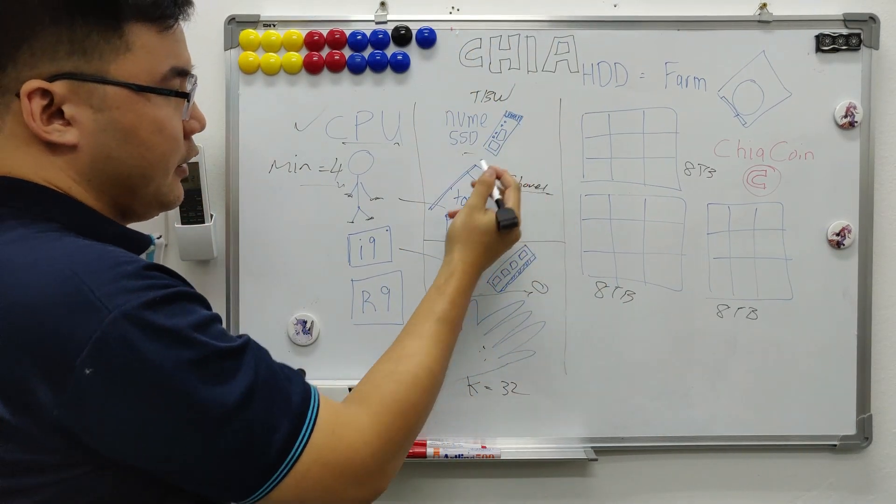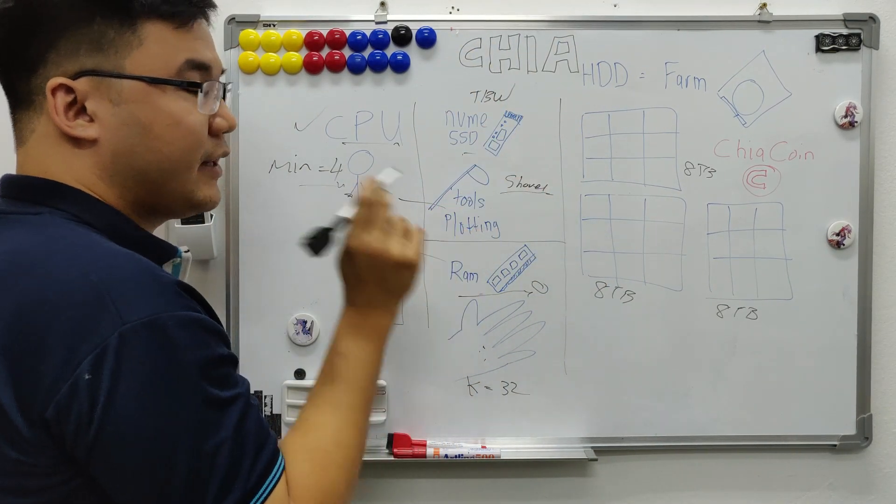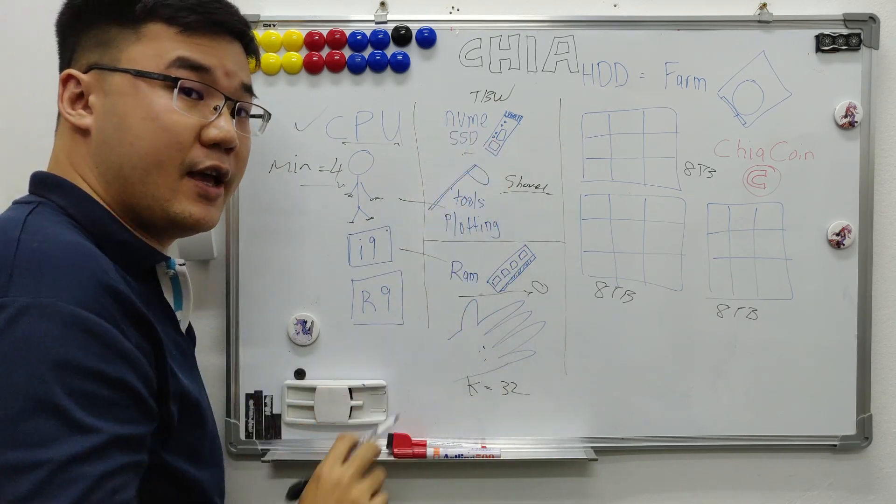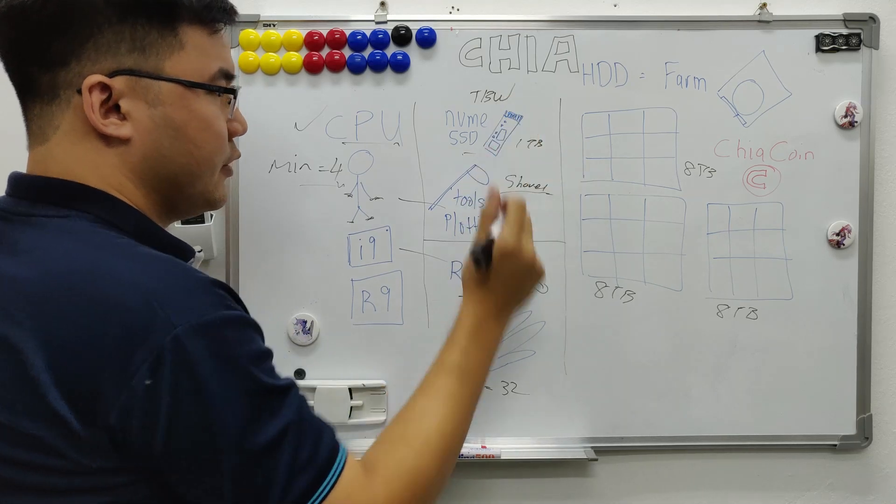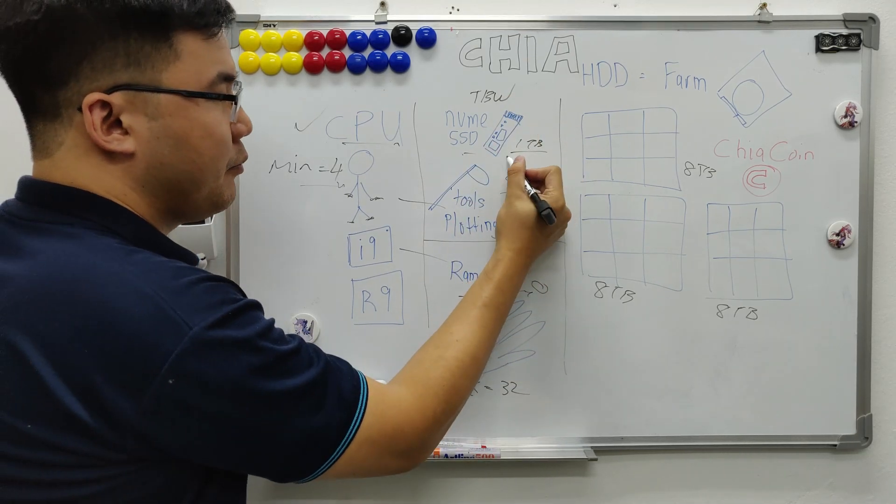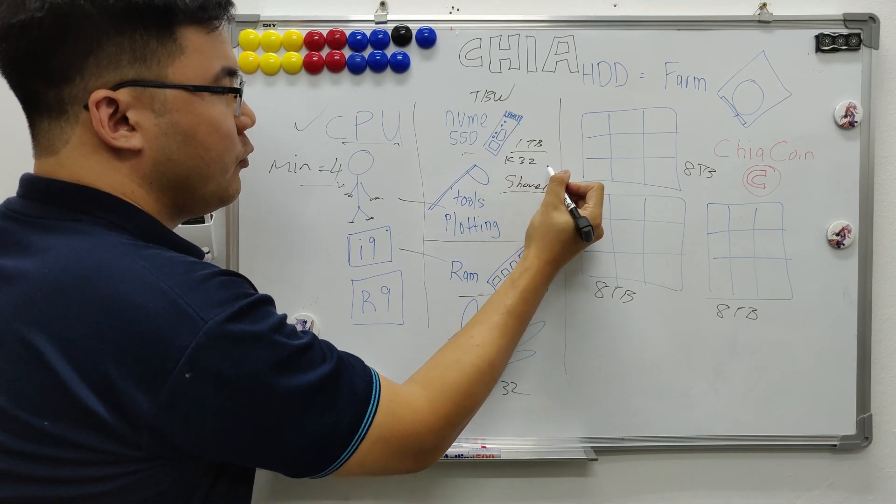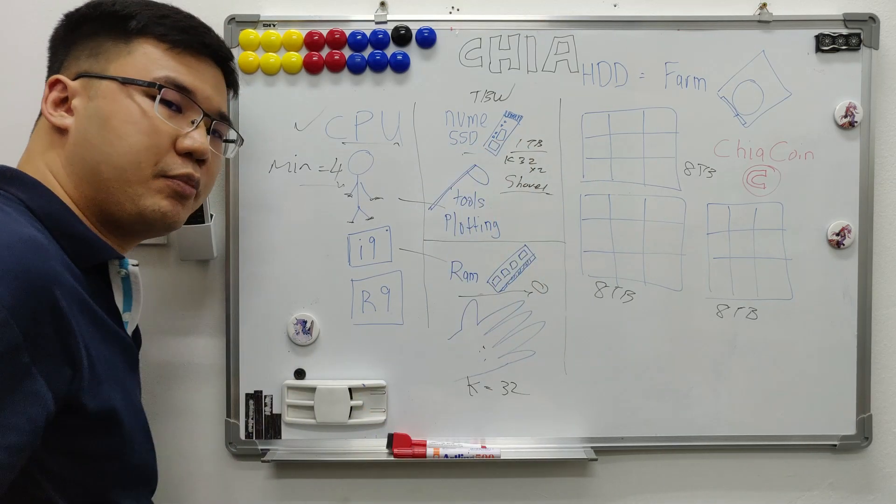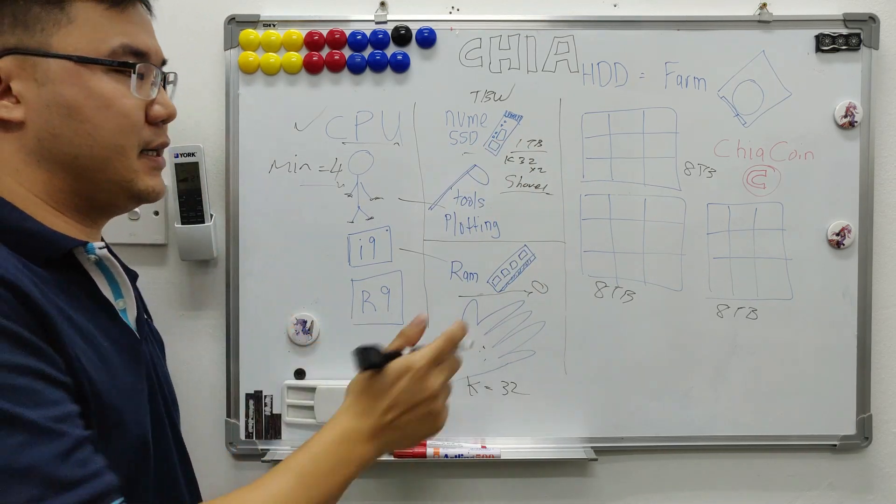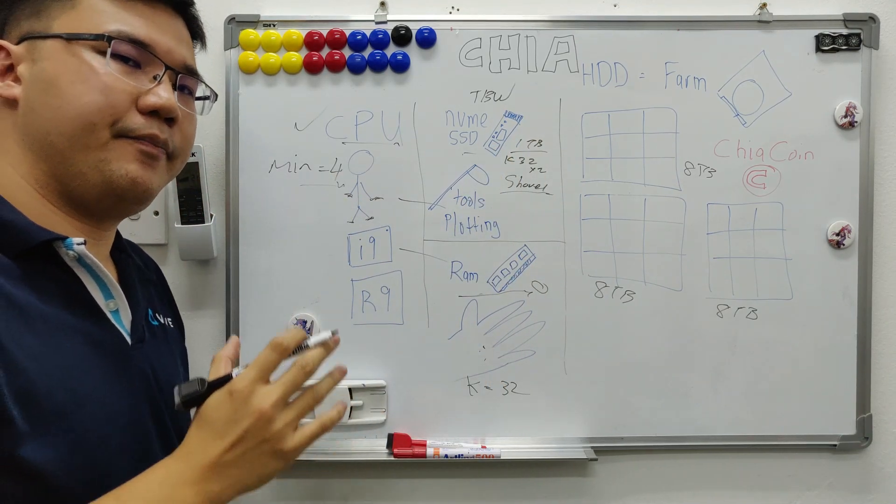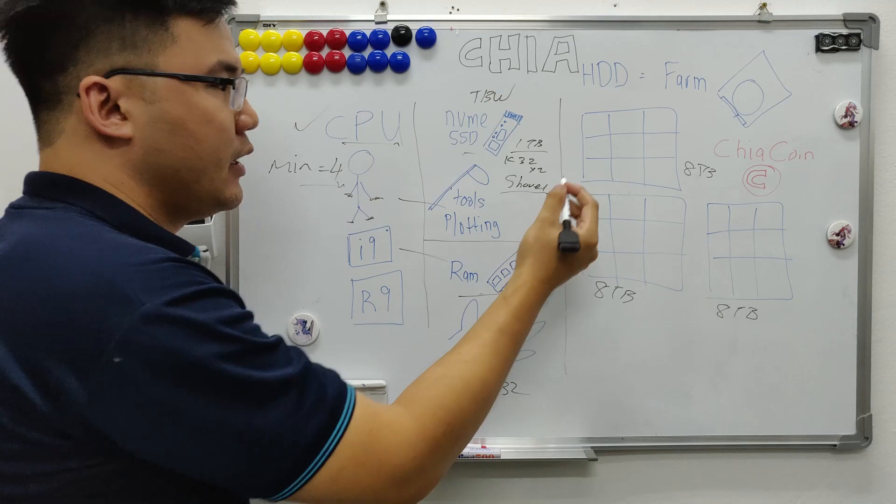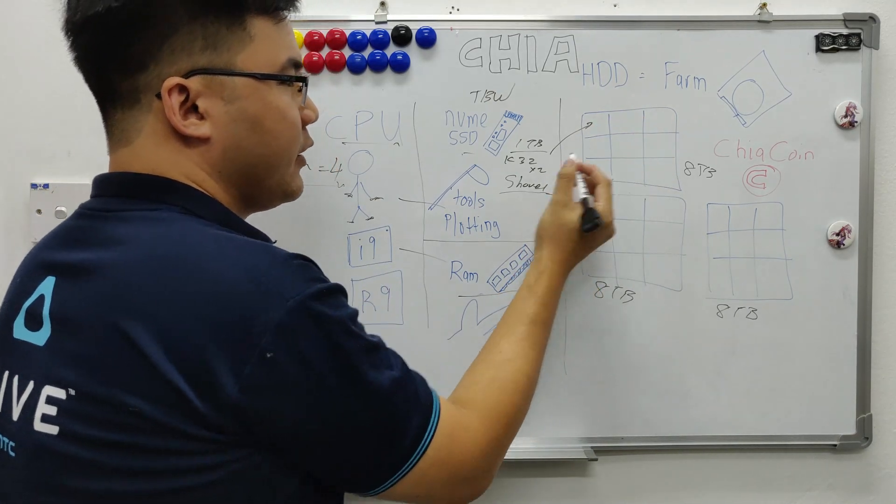It will start plotting, but temporarily, it will store in your NVMe SSD storage. For example, this is a 1 TB. Usually 1 TB, we can plot K32, 2. You can plot 2 K32 plots in here. So you temporarily plot and work, work, work, work. So once it develops a prepared land, it will be transferred here.